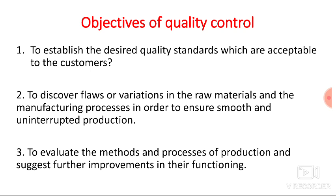Another objective is to discover the flaws or variations in the raw material and the manufacturing process in order to ensure smooth and uninterrupted production. Its role is to check the material — whatever you are buying from your vendor must be checked first. If that raw material is faulty or has defects, the quality control department will reject it or rework it. It will also find out the flaws in the manufacturing process and take corrective action.